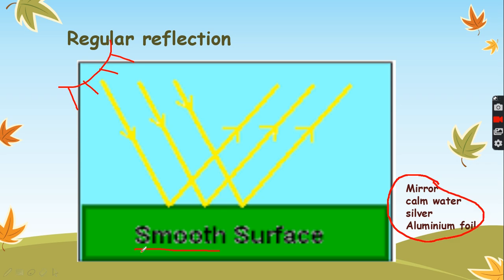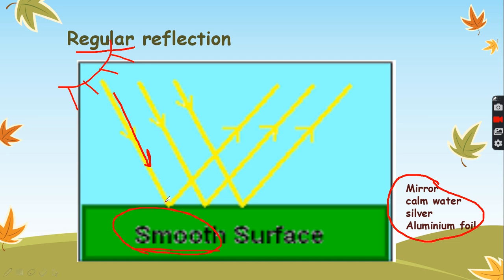The first type of reflection of light is regular reflection. It means that when light rays strike a smooth surface, all of them will be reflected in one direction. This is the meaning of regular reflection: light rays hit a smooth surface and they are all reflected in one direction.